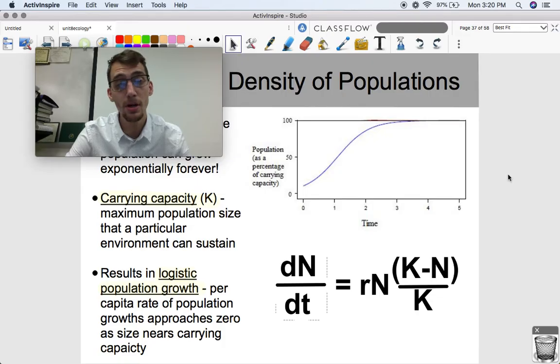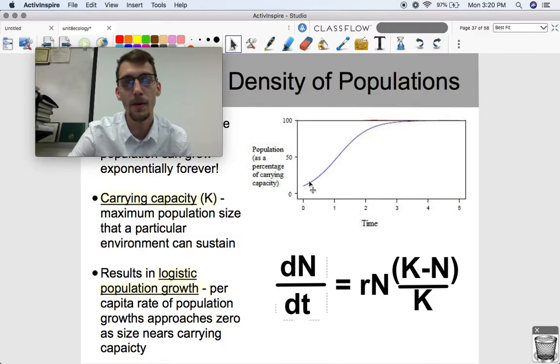And instead of a J-shaped curve like we saw before with exponential growth, we have more of an S-shaped curve. And it's often described that logistic population growth starts off as being exponential. And then as the population size approaches the carrying capacity, the growth slows down as well.